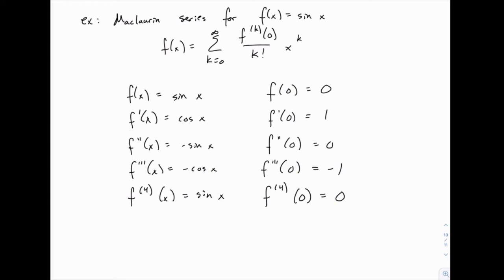It's alternating from 0 to positive 1, 0 to negative 1, 0 to positive 1, 0 to negative 1. But the question is, how do we write that in a concise form?